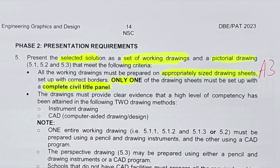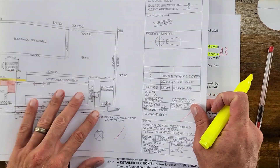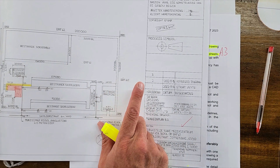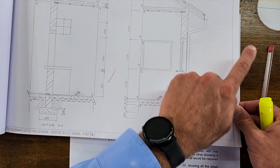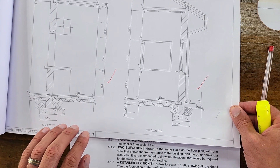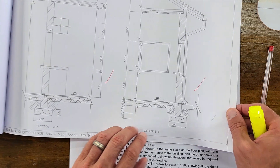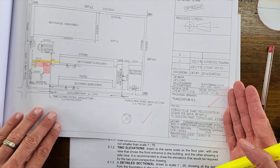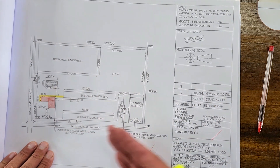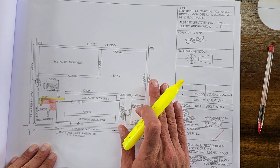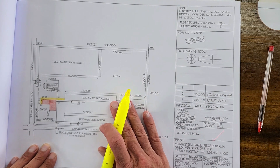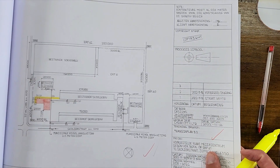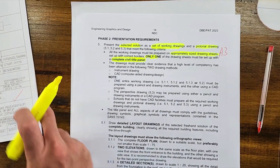This civil title panel — which I'll give you examples of — needs to be on one of these drawings. The rest of the pages can just have a regular border with your name, the drawing title, the page number, and the date of completion. It's only one drawing that needs to have a full civil title panel, and you can decide which drawing is best suited. Previous years, students in my class did it on the site plan, but you can use any other page — although it does take up a lot of space, so consider that.